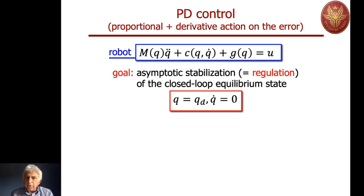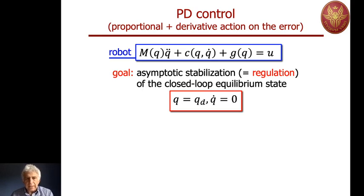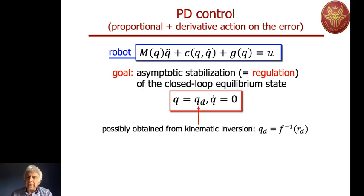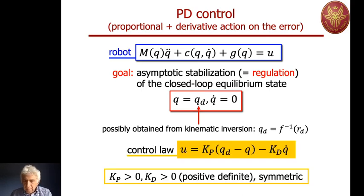Let's start considering the first control law for the problem at hand. We consider our robot with its full dynamics: the inertial terms, the Coriolis and centrifugal terms, the gravity terms. Our goal is to regulate — namely to obtain asymptotic stabilization of a desired equilibrium state in the closed-loop system. The equilibrium state has zero velocity and a desired configuration qd. We consider a desired controller of the form u = Kp(qd - q) - Kd*q_dot. This is called a classical PD control with respect to the position error.